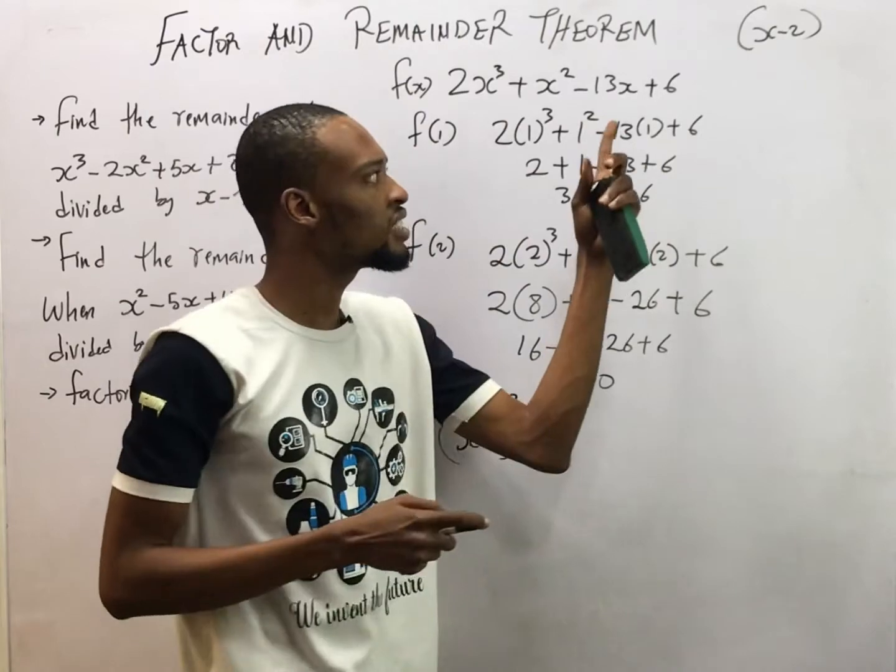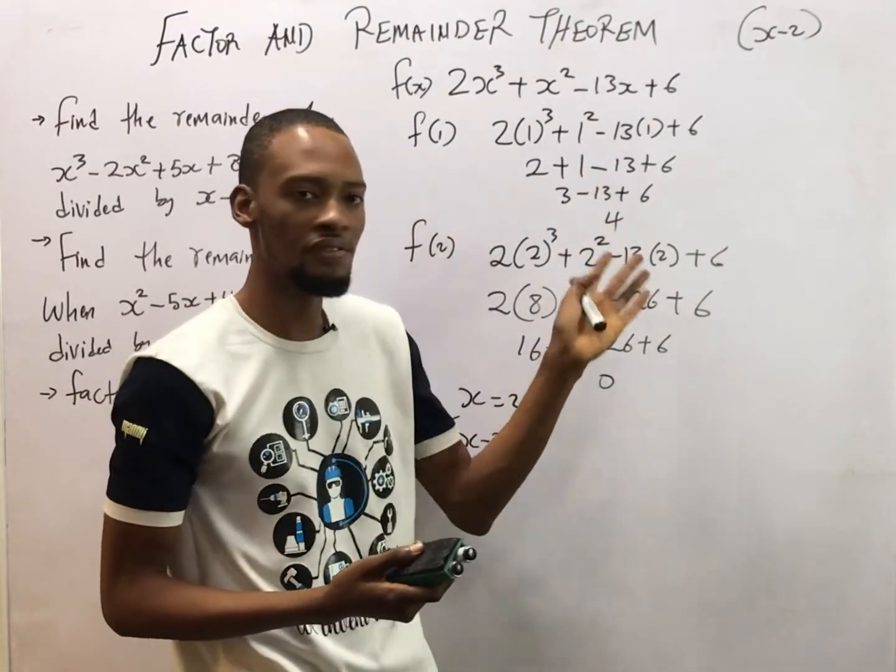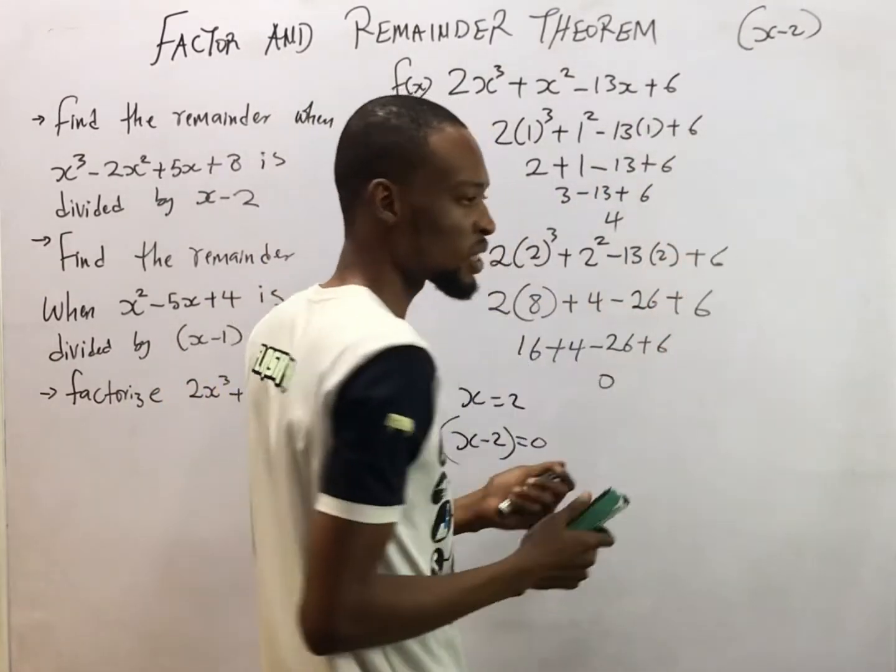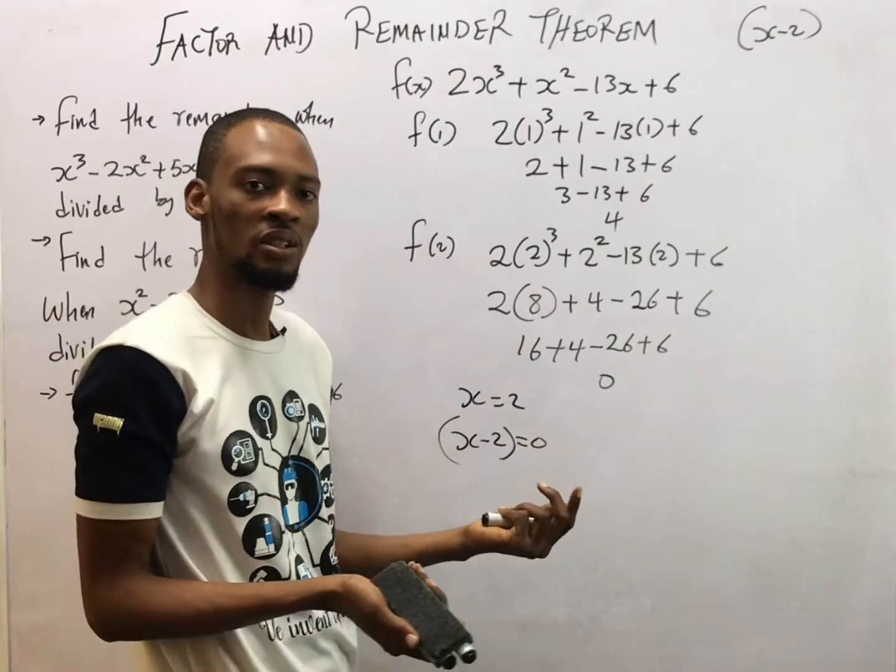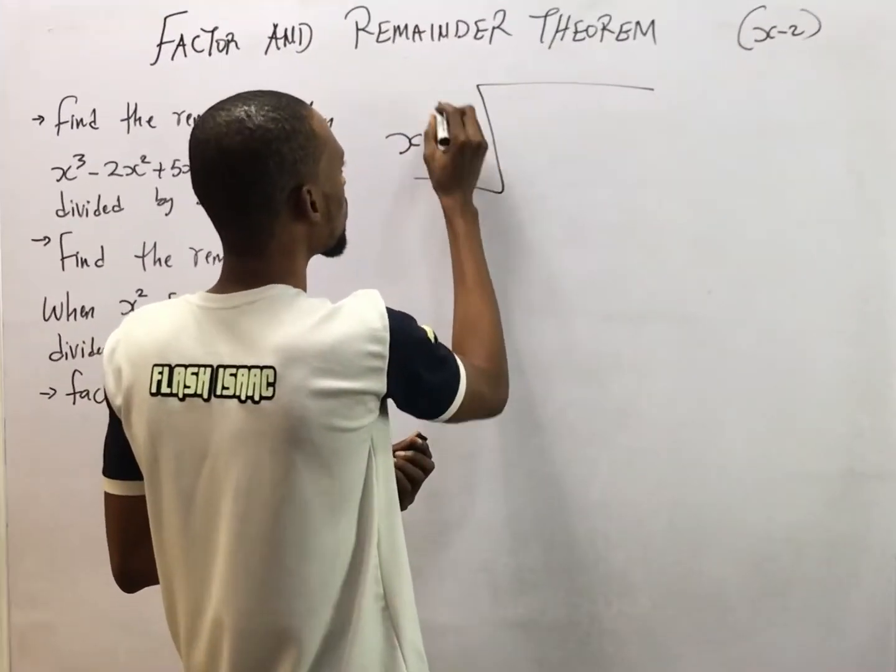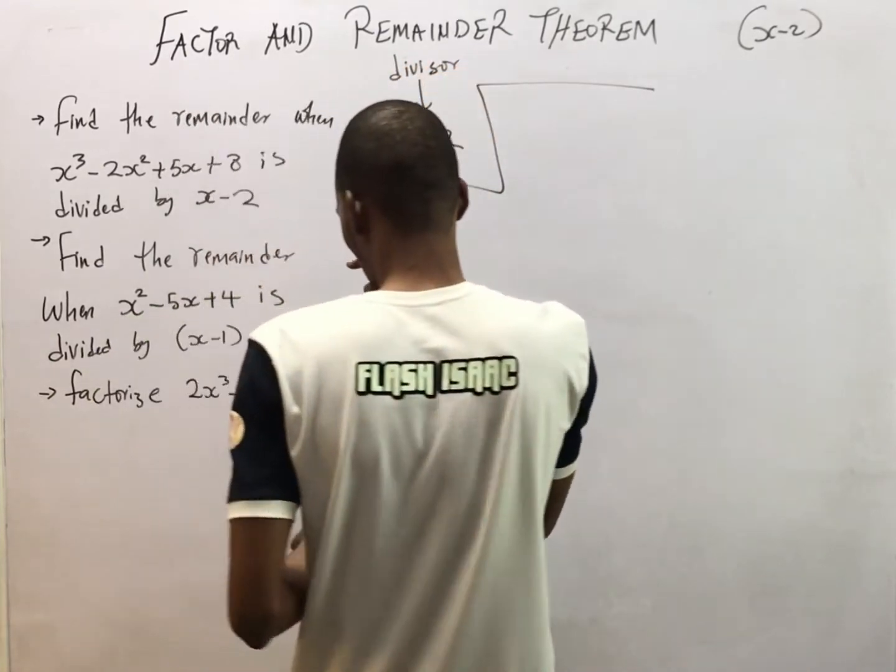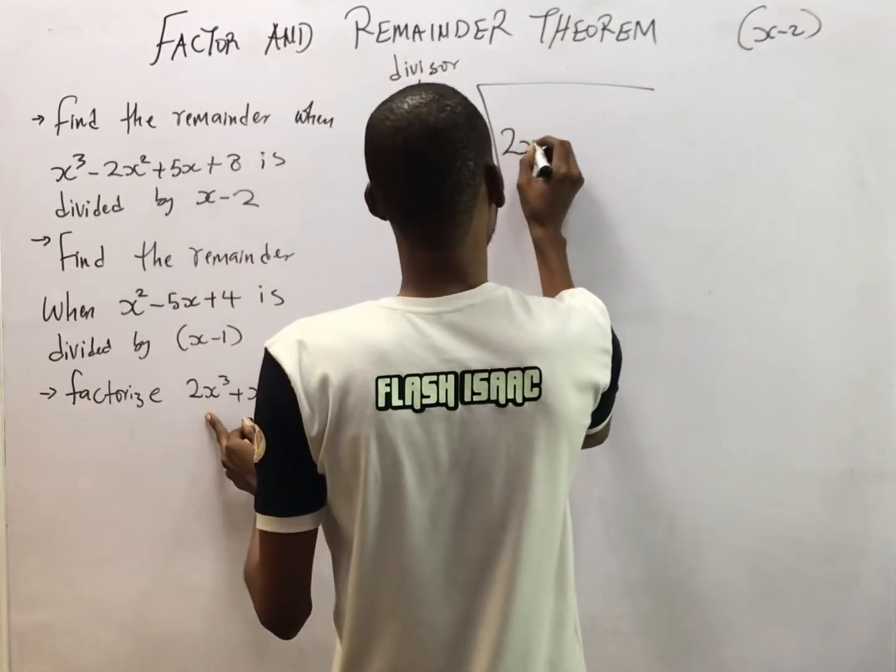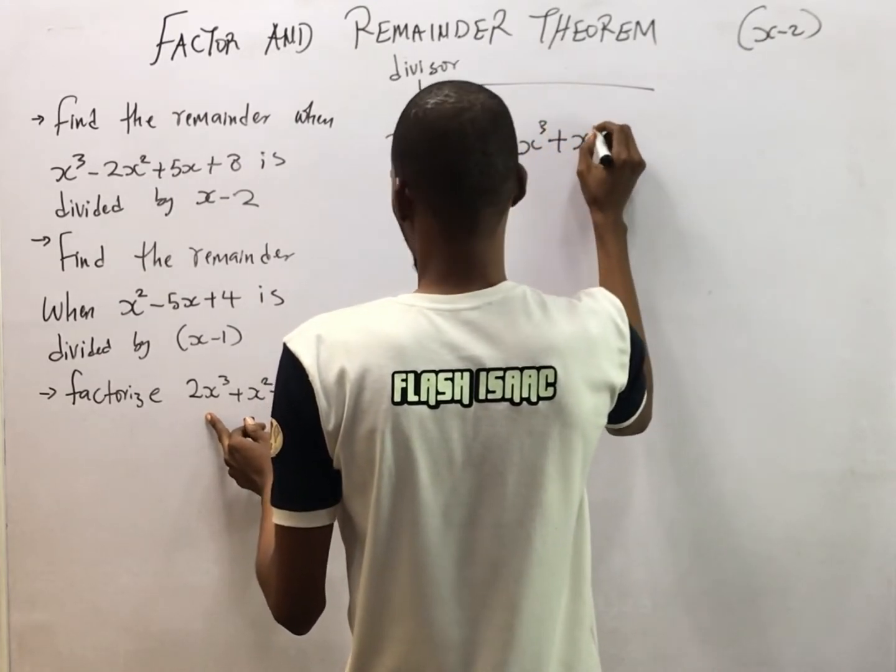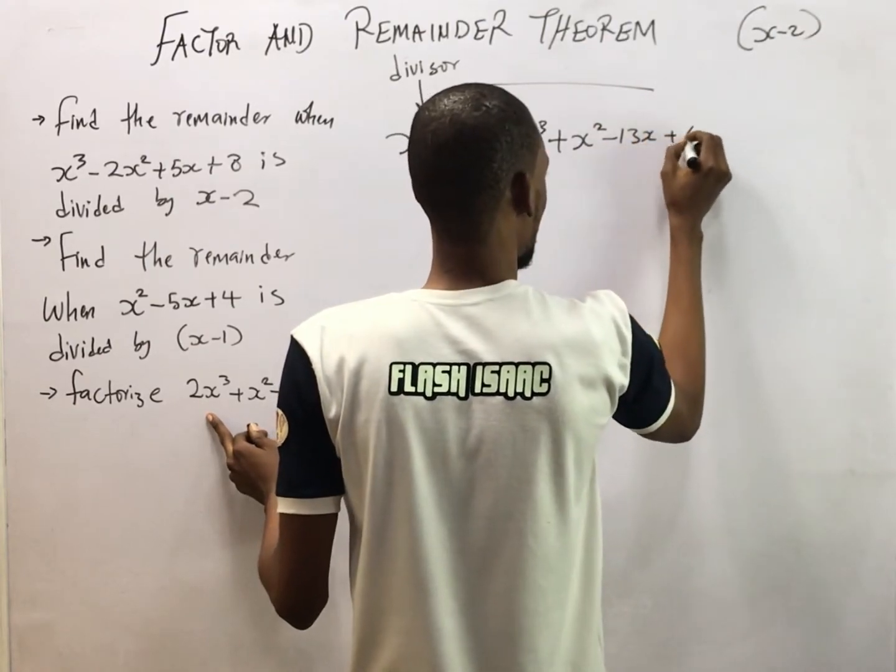Now that you've gotten the first factor, how do we get the other two factors? S minus 2. This is simply by long division. So you divide this polynomial by S minus 2 to get the other factors. S minus 2. This is the divisor.